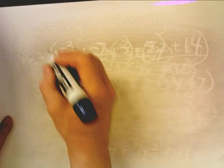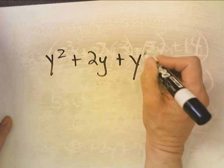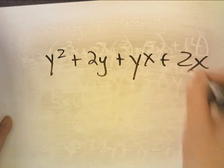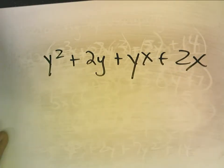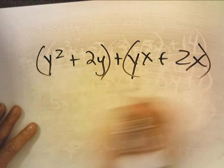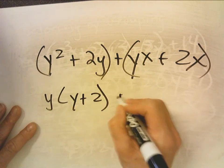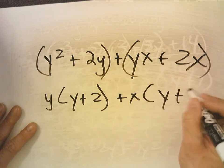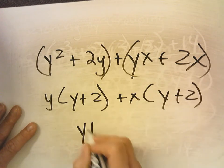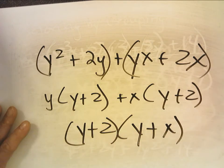So let's try another one. y squared plus 2y plus yx plus 2x. So let's factor this by grouping. Group these two, group these two. I take out a y. I get y plus 2. Here I take out an x. I get y plus 2. So now I have y plus 2 times y plus x.